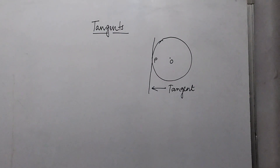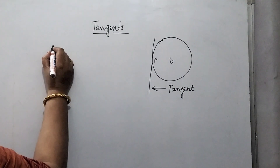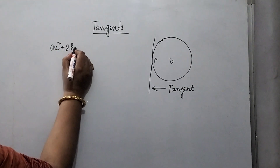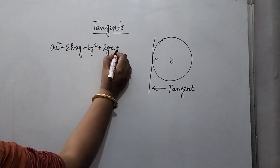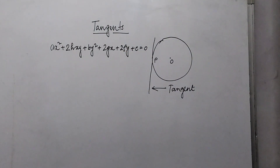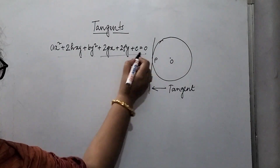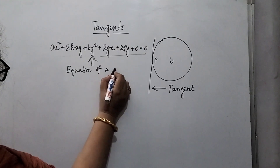So for any conic, we can find such tangents. Now today we have to first know how from the equation of a conic we can derive the equation of its tangent at any arbitrary point. Let us consider the equation of a general conic: ax² + 2hxy + by² + 2gx + 2fy + c = 0. This is the general equation of a conic.